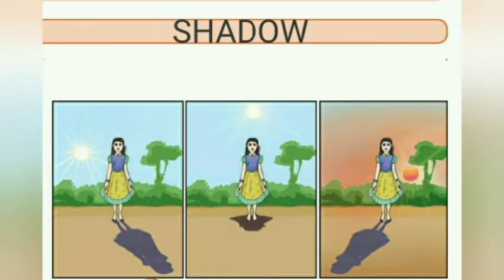Surprise! Shadow! What is a shadow? Yes, when an object does not allow the light to pass through, it forms a dark area, and this is called a shadow.